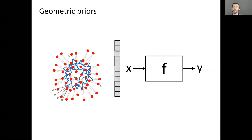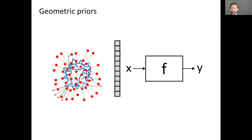Geometric deep learning is now used almost synonymously with graph neural networks, but I hope to convince you it's a small piece of a broader picture we call geometric priors. What I'm presenting today is based on a textbook I'm working on with Joan Bruna, Pim de Haan, and Taco Cohen. In high-dimensional learning problems, data often has underlying geometric structure forming a powerful prior.